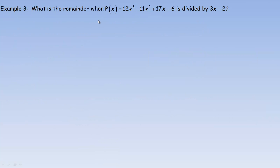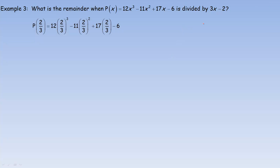In the last example, we're asked what is the remainder when this polynomial is divided by 3x minus 2. We would find p(2/3). The reason is that 3x minus 2 gives the restriction: setting 3x minus 2 equal to 0, adding 2 to both sides gives 3x equals 2, then dividing by 3 gives x equals 2/3. So this is the same as dividing by x minus 2/3.